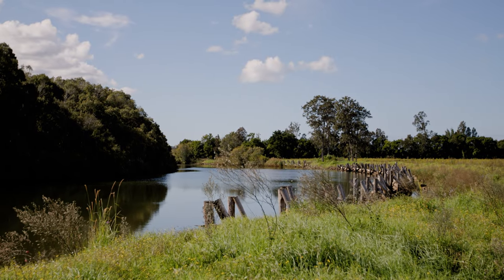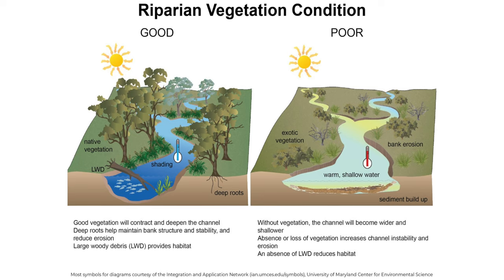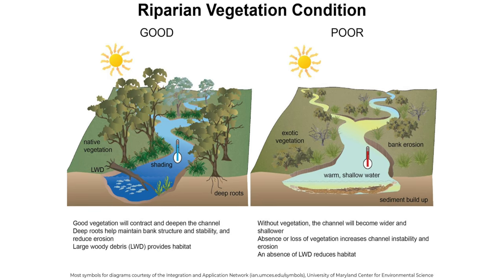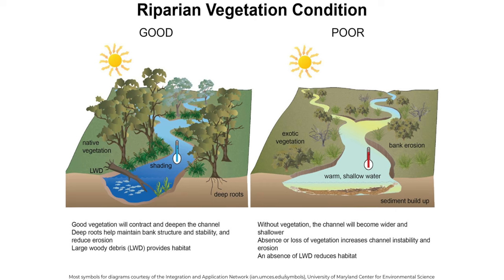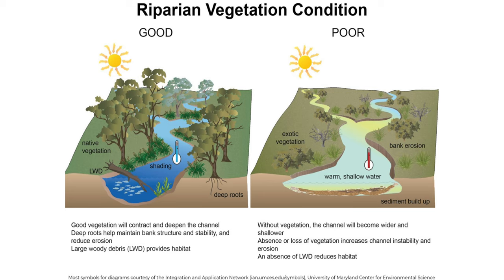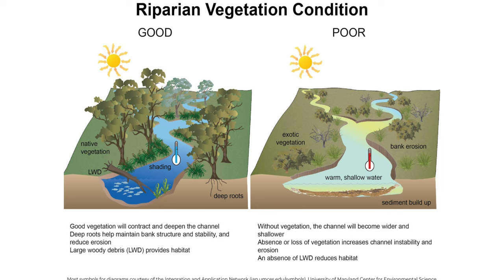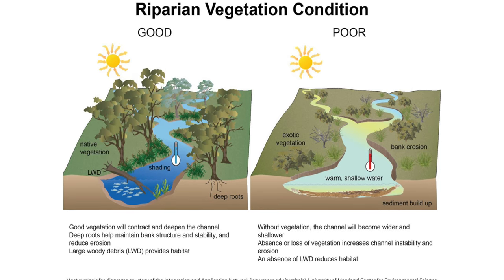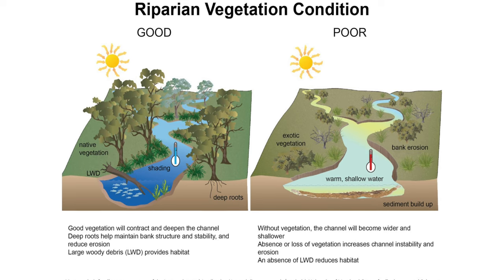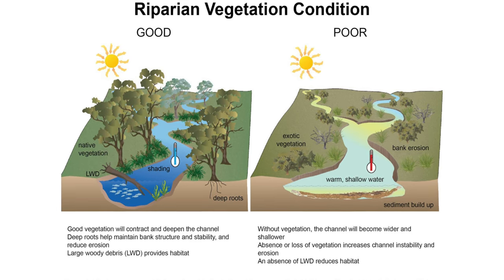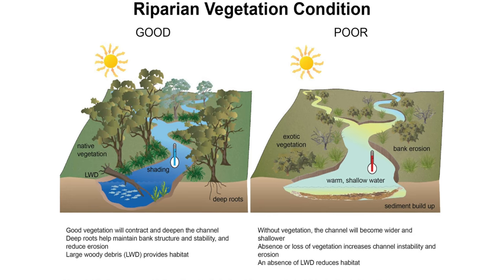Another key concept for river condition and management is the importance of riparian vegetation. The riparian zone includes the river banks and adjoining land. The image on the left shows a riparian zone in good condition. You can see good vegetation cover with deep roots for bank stability to prevent erosion. The trees also provide shade. Cool rivers are more resilient to impacts after floods and provide a better environment for aquatic life cycles. You can also see large woody debris from fallen trees for habitat, bank stability and pool depth.